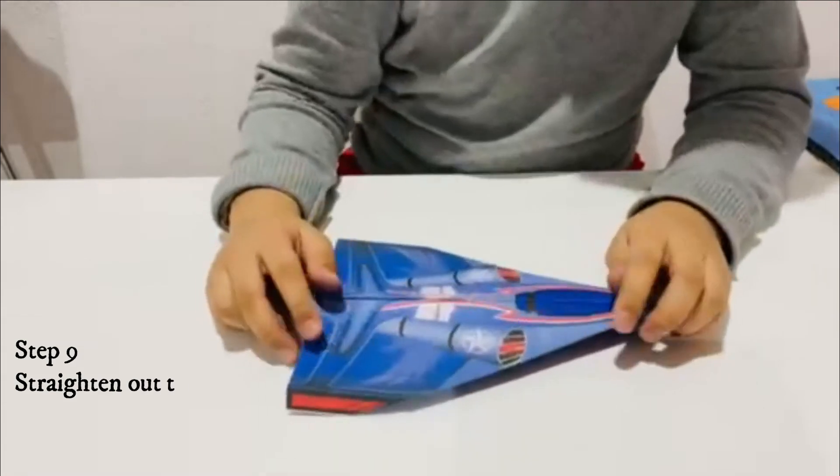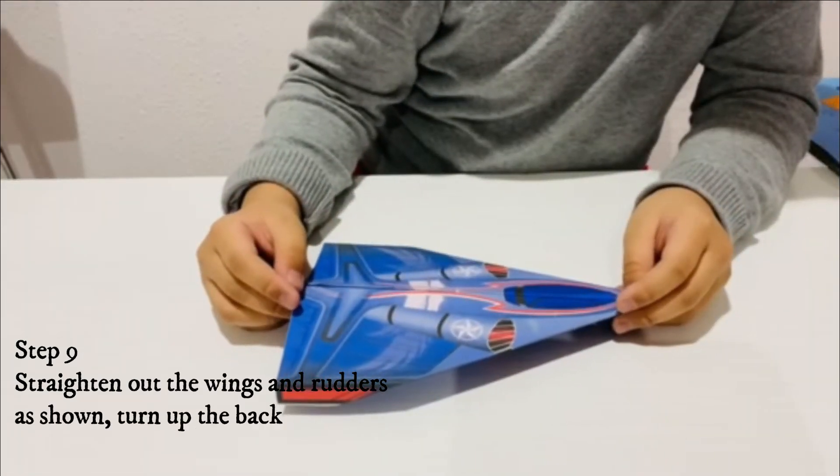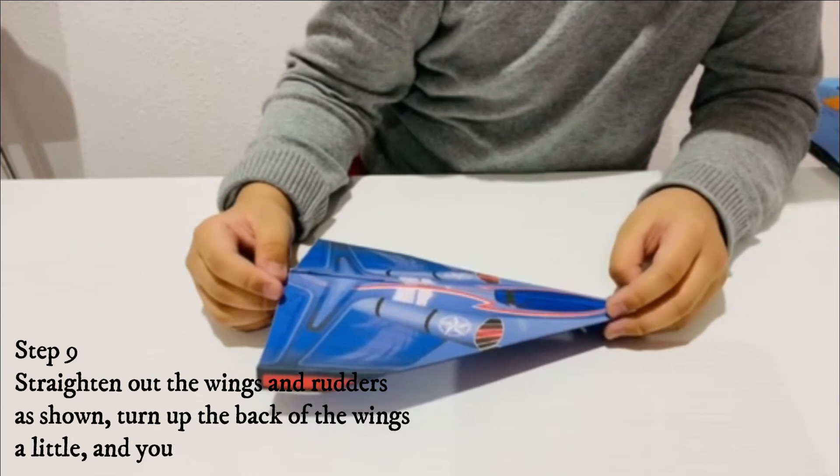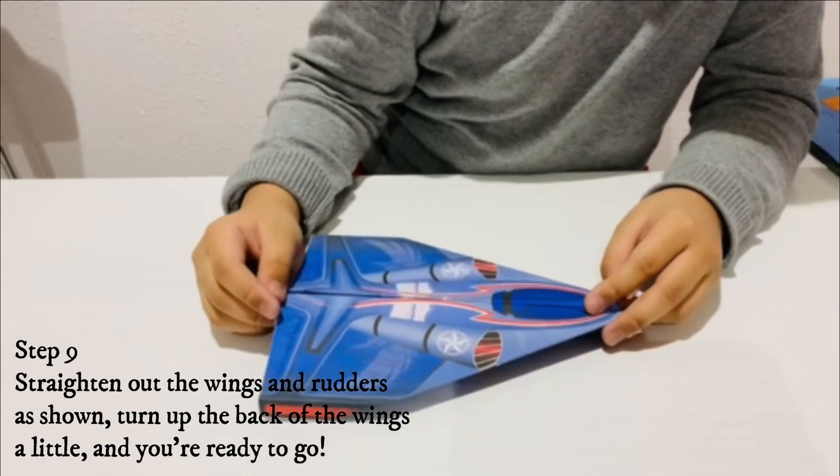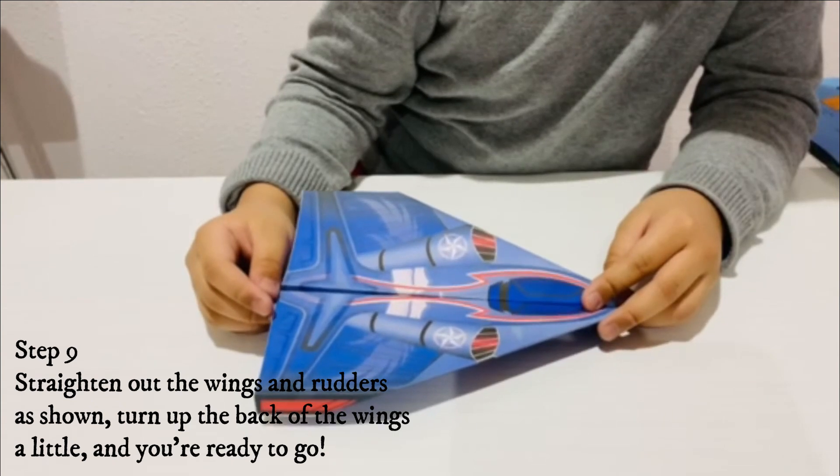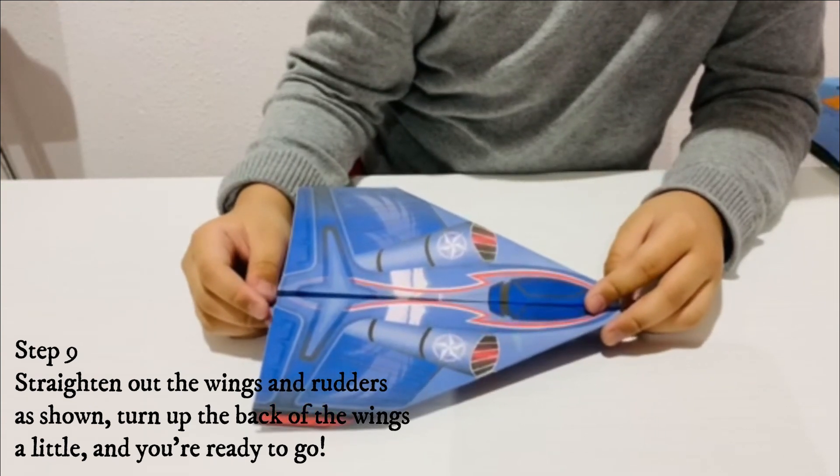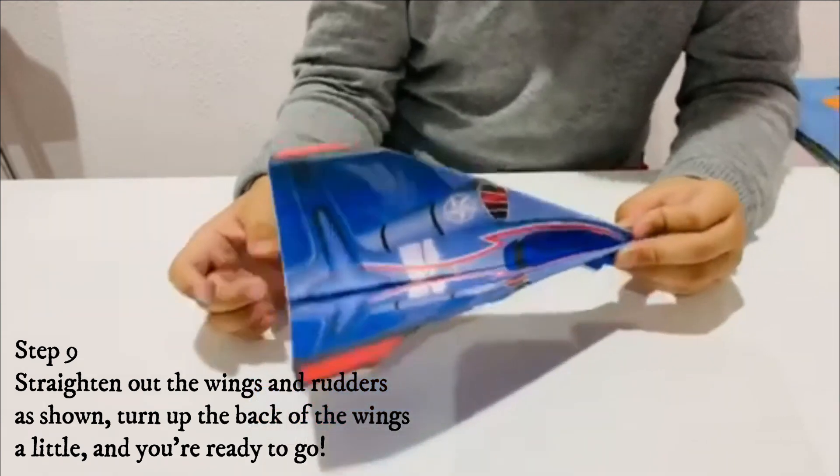Step 9: Straighten out the wings and rudders as shown, turn up the back of the wings a little, and you're ready to go.